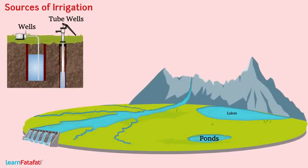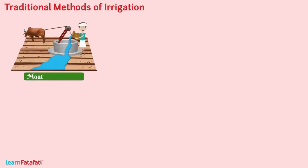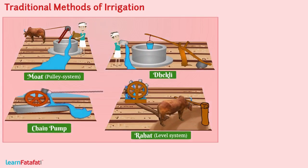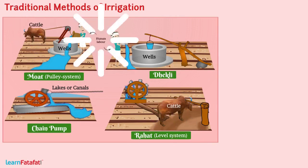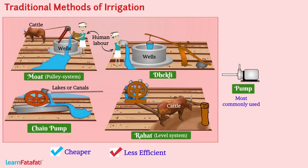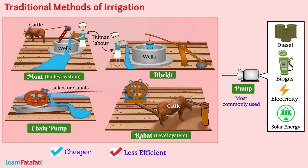Sources of Irrigation. Various sources of irrigation are wells, tube wells, ponds, lakes, rivers, dams, and canals. Traditional methods include the mote (pulley system), chain pumps, dhekli, and rahat (lever system) to bring water from wells, lakes, or canals. These are based on cattle or human labor, so they are cheaper but less efficient. Of all traditional methods, pumps are most common, using diesel, biogas, electricity, or solar energy as fuel.